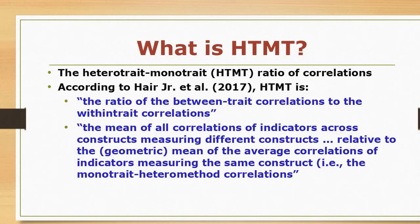What is HTMT? We call it hetero-trait mono-trait ratio of correlations. According to Dyer et al. 2017, HTMT is simply the ratio of the between-trait correlations to the within-trait correlations. There are several other definitions of HTMT, but you can find them in the literature.